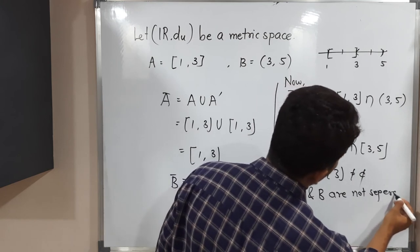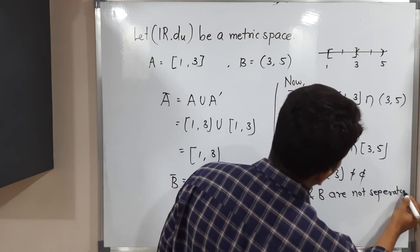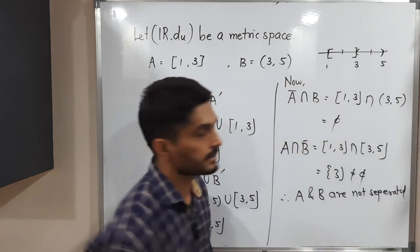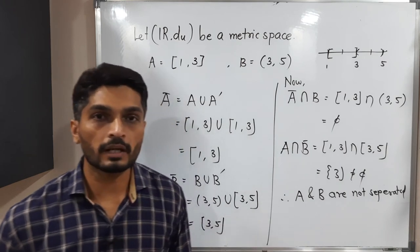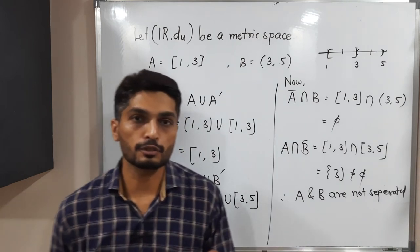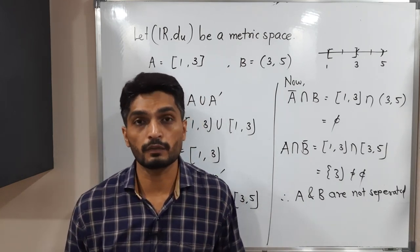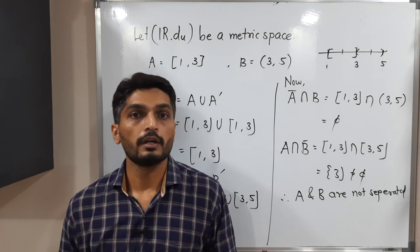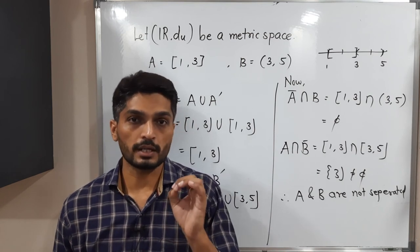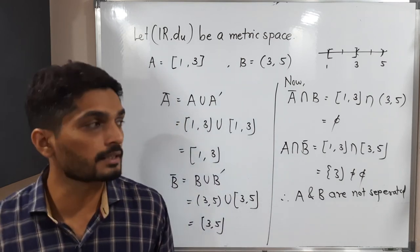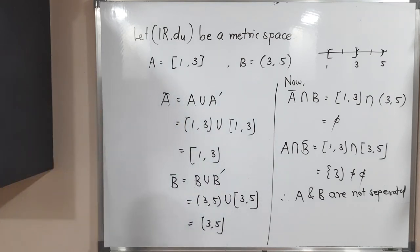So in this way, when we have two sets, we check whether A-bar intersection B equals phi and A intersection B-bar equals phi. If both conditions are satisfied, we declare yes, these are separated sets. Otherwise, we say these are not separated sets.